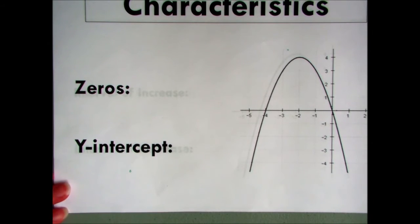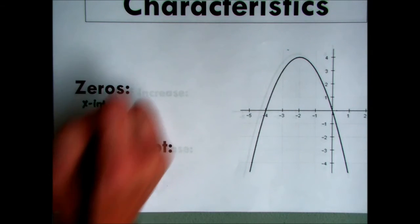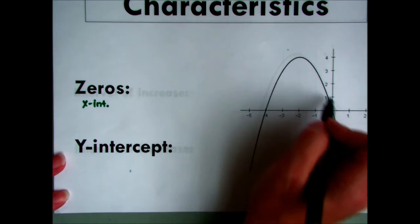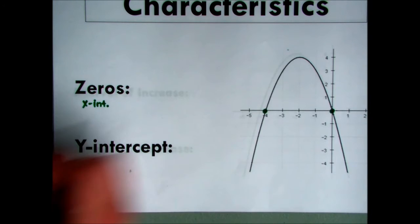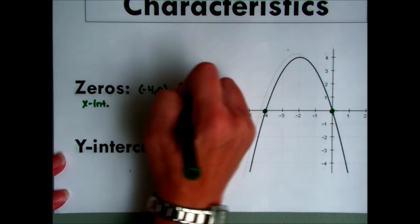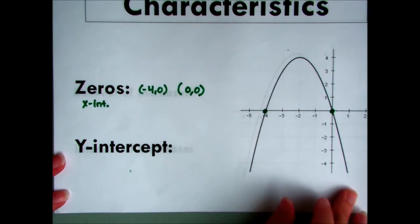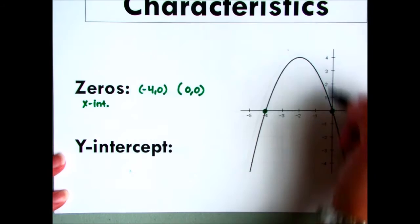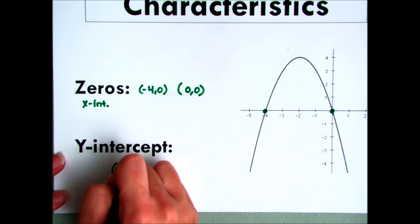Another set of characteristics for our functions are zeros. Zeros are actually just your x-intercept. And so you look at where this graph crosses the x-axis, which is here and here. So our x-intercept could be here at negative 4, 0, and it can be here at 0, 0. Our y-intercept is where this graph will cross the y-axis, which it actually crosses the y-axis right here as well, which is at 0, 0.